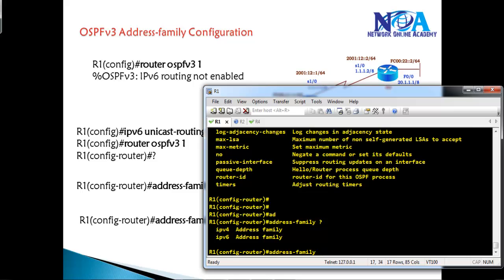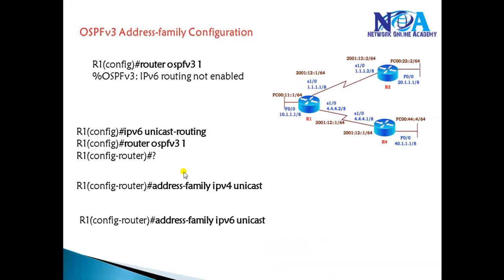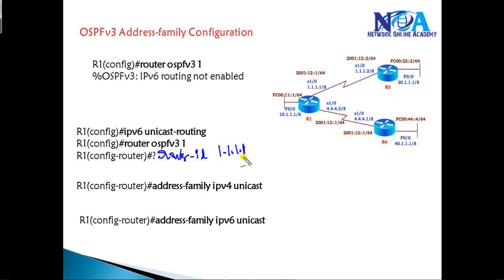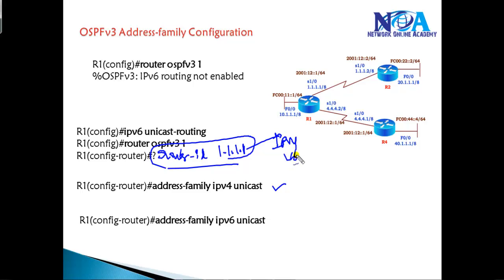Under the OSPFv3 router mode, there is an address family option for either IPv4 or IPv6. If you configure something — for example, a router ID like 1.1.1.1 — without entering a specific address family, it will apply for both IPv4 and IPv6.